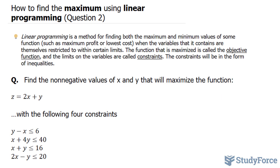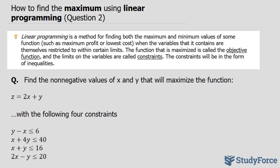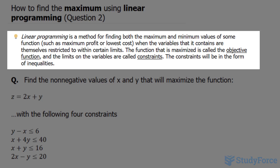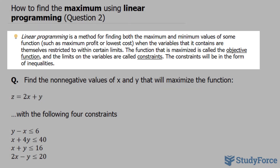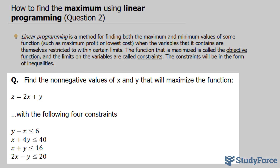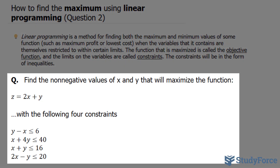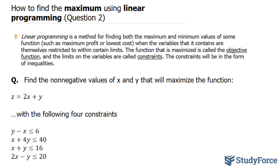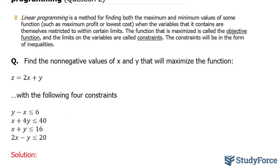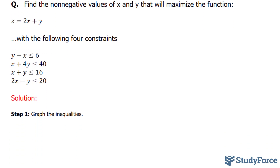In this video, I'll show you how to find the optimal value using linear programming. This is question 2. We've already covered this content in question 1, so be sure to watch that video if you haven't already. The question reads: find the non-negative values of x and y that will maximize the function z = 2x + y, with the following constraints shown below. The first thing we have to do is graph these four constraints.